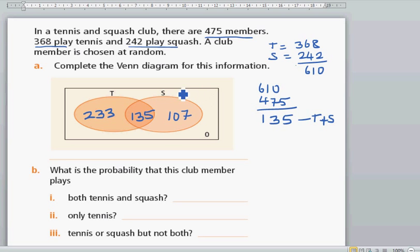So this region which is outside the circles or the ellipse is for the people who don't play tennis or squash. So if you add these three numbers it should give you 475. You can check that yourself.